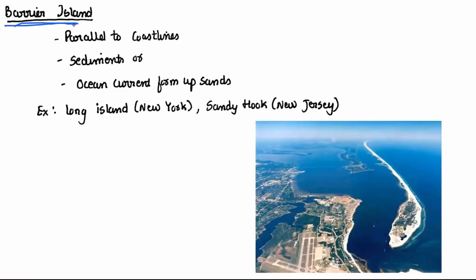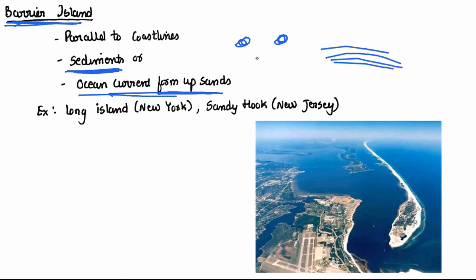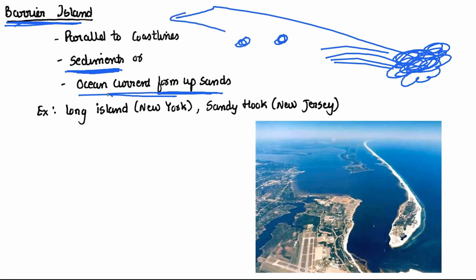The last type is Barrier Islands. There are two ways they may be formed: one is due to sediments — small stones or silt that move along the water, pile up and form islands — and the other is due to ocean currents bringing sand and depositing it. If an island is formed in this process, it is also called a barrier island.